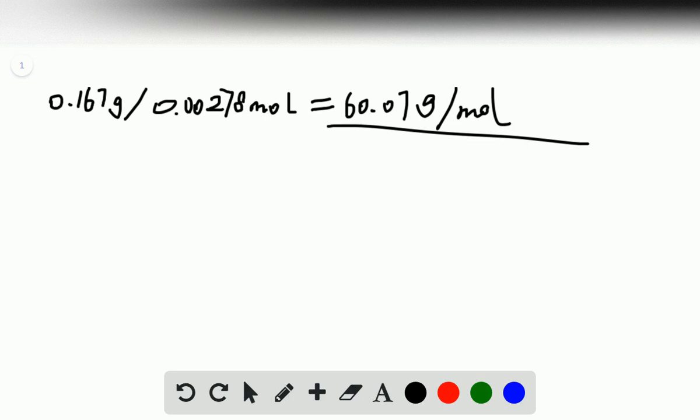Then we know this compound contains 40% carbon, so we use the molar mass, 60.07 times 40%, and we got 24 grams.